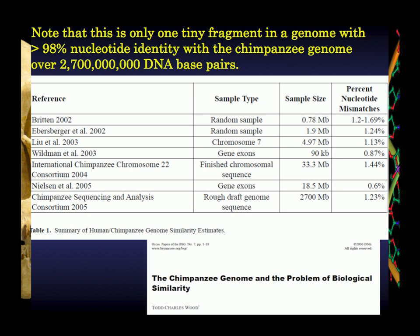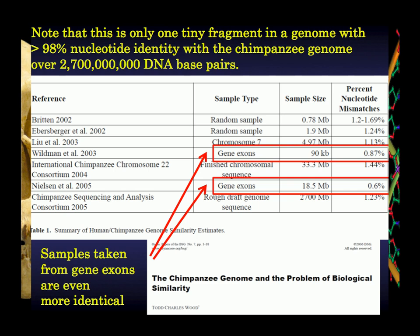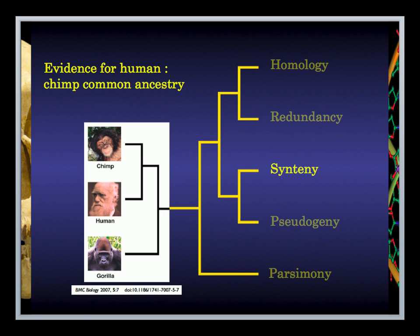If you look specifically at the parts of the genome used to make proteins — and it might be surprising that most of our genome doesn't make proteins, only quite a small percentage — gene exons, that's the technical term for the bits that make proteins, just like insulin. If we look at those sequences, they're even more similar to one another: they differ by only 0.6% across a sample size of about 18.5 million base pairs. Not only are we homologous and have essentially the same genes, but the redundancy issue shows that even though multiple coding options are available, the code across the vast majority of the genome is exactly what you would predict based on common ancestry.